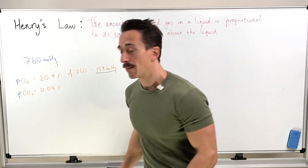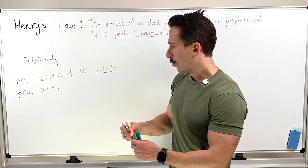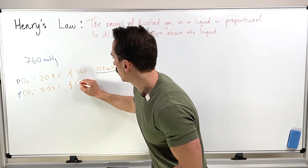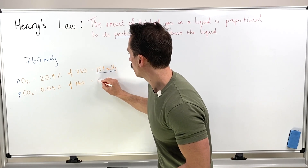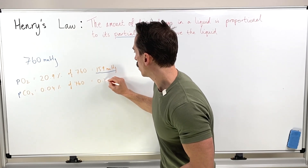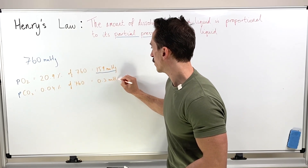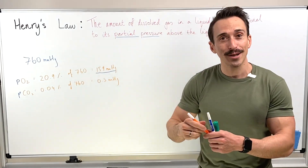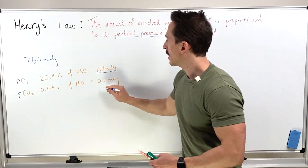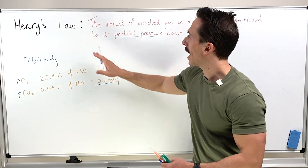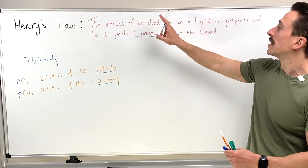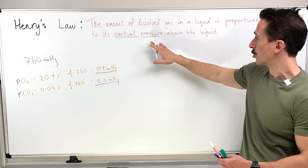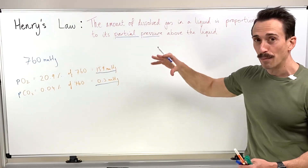What's the partial pressure of carbon dioxide? Carbon dioxide makes up 0.04% of the atmosphere, so 0.04% of 760 gives us 0.3 millimeters of mercury — that's the partial pressure of carbon dioxide in our atmosphere. Now let's take a look at Henry's law, which states the amount of dissolved gas in a liquid is proportional to its partial pressure above the liquid.